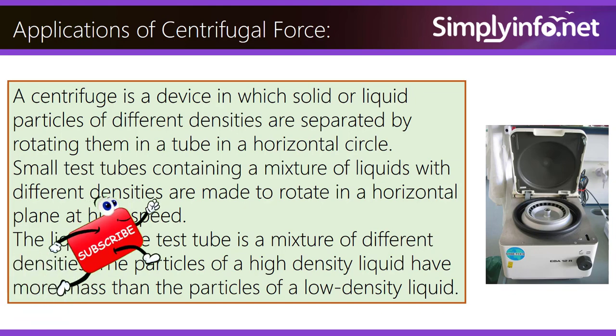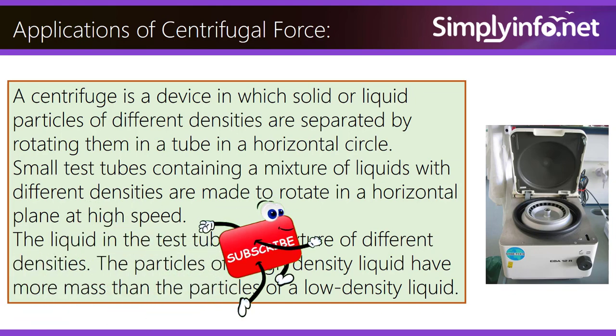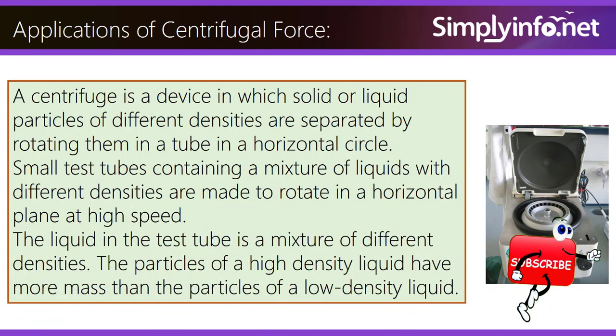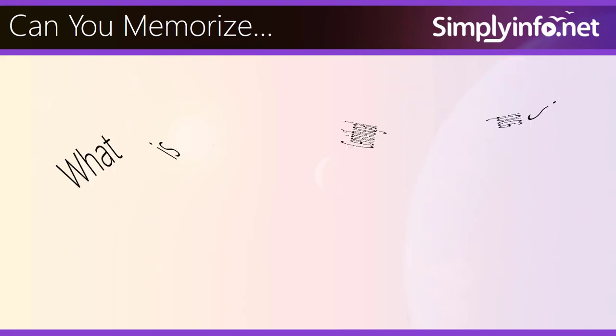Small test tubes containing a mixture of liquids with different densities are made to rotate in a horizontal plane at high speed. The liquid in the test tube is a mixture of different densities. The particles of a high-density liquid have more mass than the particles of a low-density liquid.